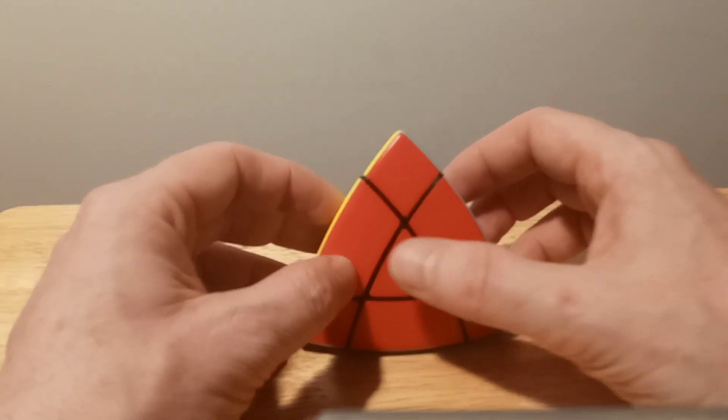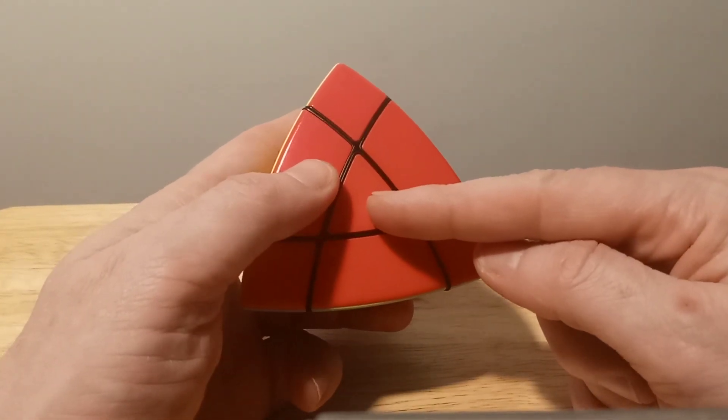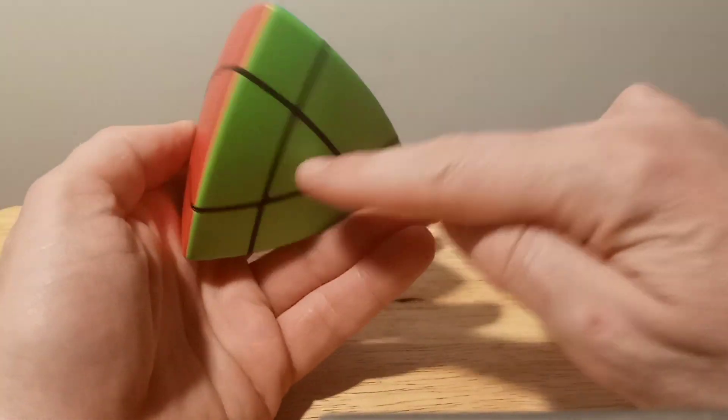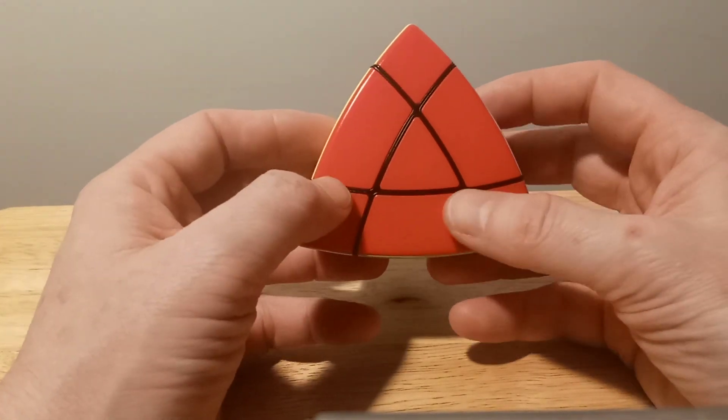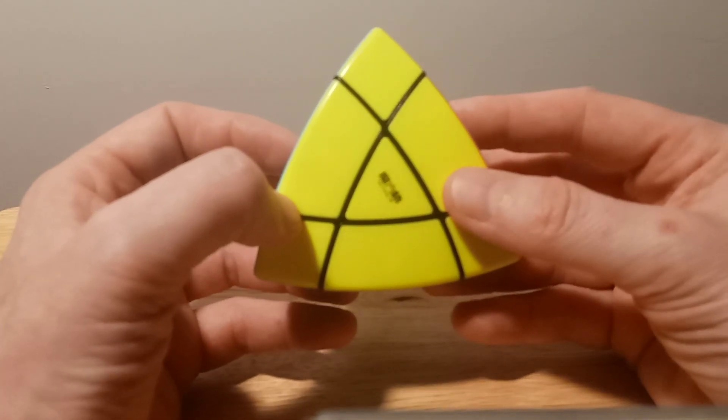The Paraminx doesn't have the centers. But that's what's really neat you could do on these is the sledgehammer move to replace the centers all the way around. On the Paraminx, you can't do that. I love doing that, and it's a really great puzzle. I really enjoy this.